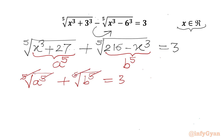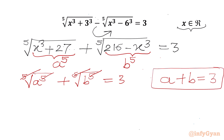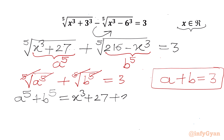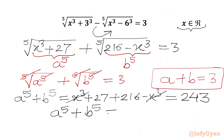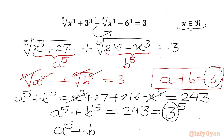The fifth root and the fifth power cancel, giving our first equation: a + b = 3. Now I will add a⁵ with b⁵. So a⁵ + b⁵ equals x³ + 27 + 216, which equals 243. And 243 is 3⁵. So our first equation was a + b = 3, which means we can replace 3 with (a + b), giving us a⁵ + b⁵ = (a + b)⁵.